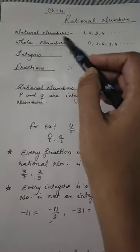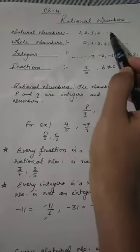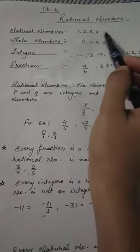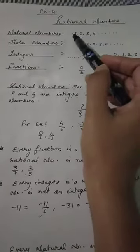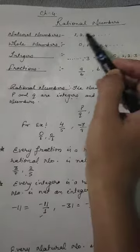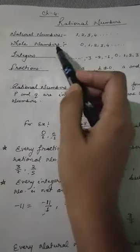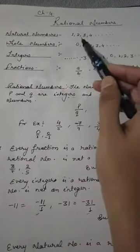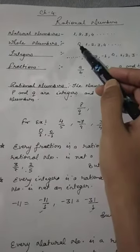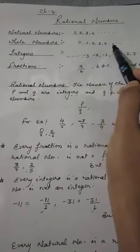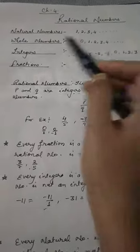What are natural numbers? All counting numbers are called natural numbers — that means all positive counting numbers. Whole numbers are all counting numbers including 0.